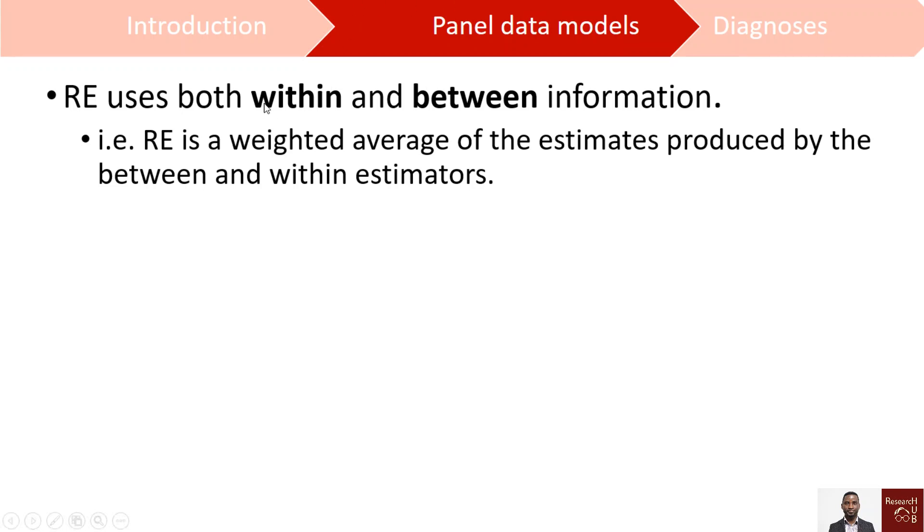So let's say individual one, all the available information from year one to year seven will be used and also across the units so we call it the between information. Random effect is a weighted average of the estimate produced by the between estimator and then the within estimator. We will look into these between and within in separate videos.